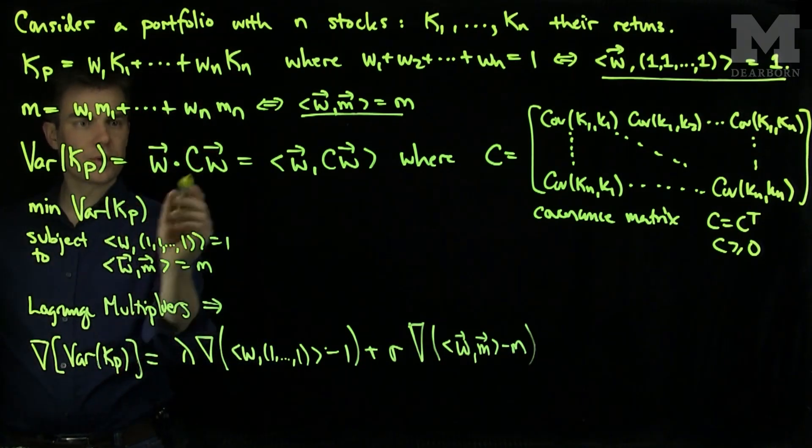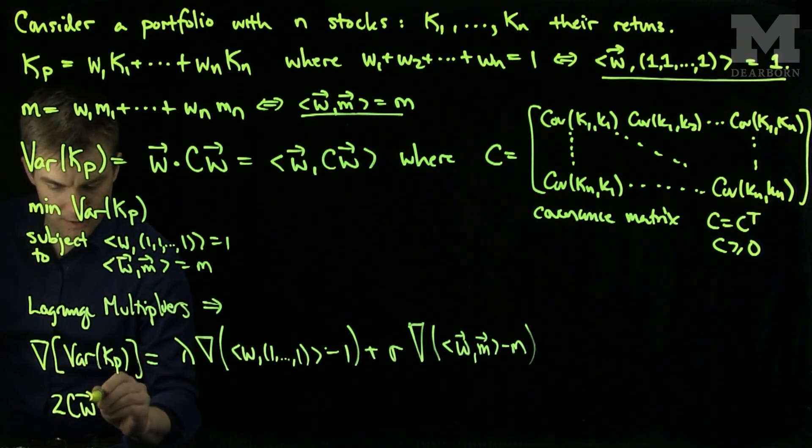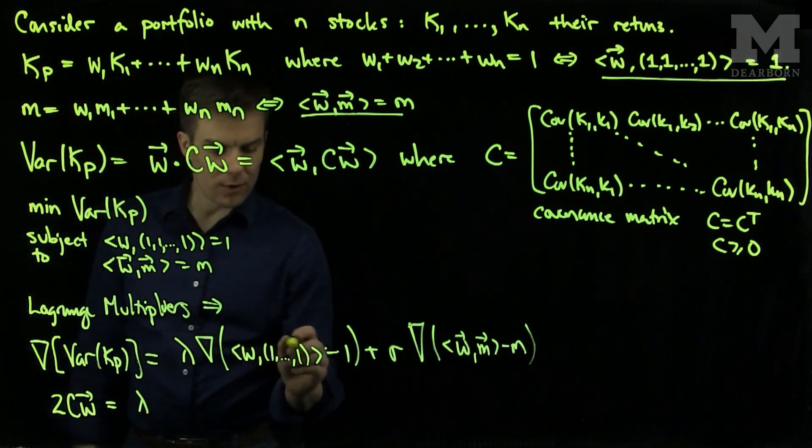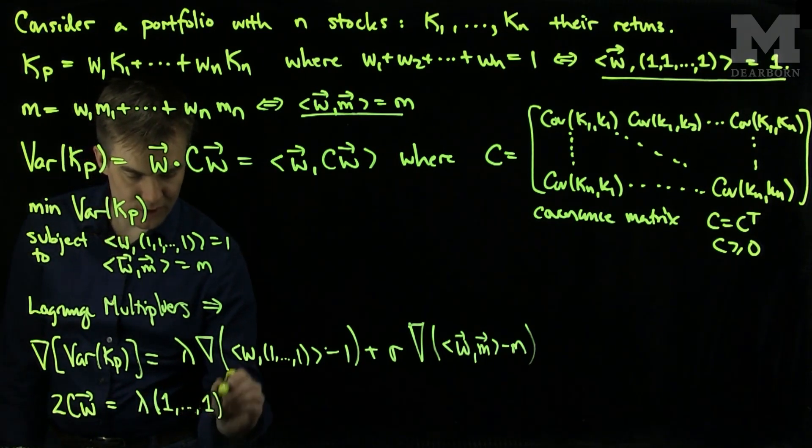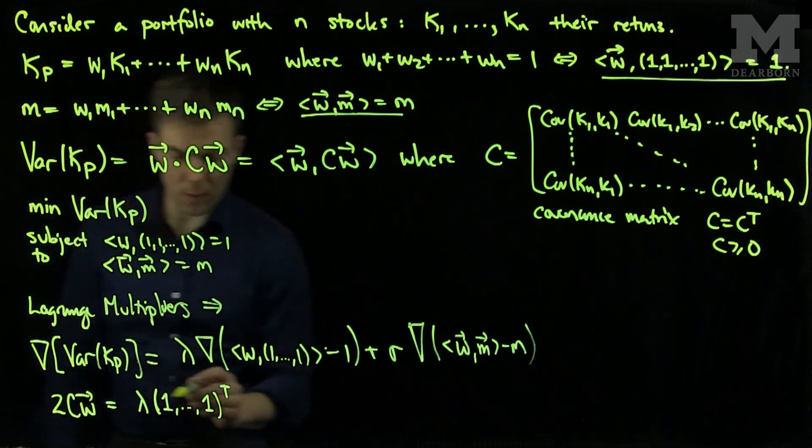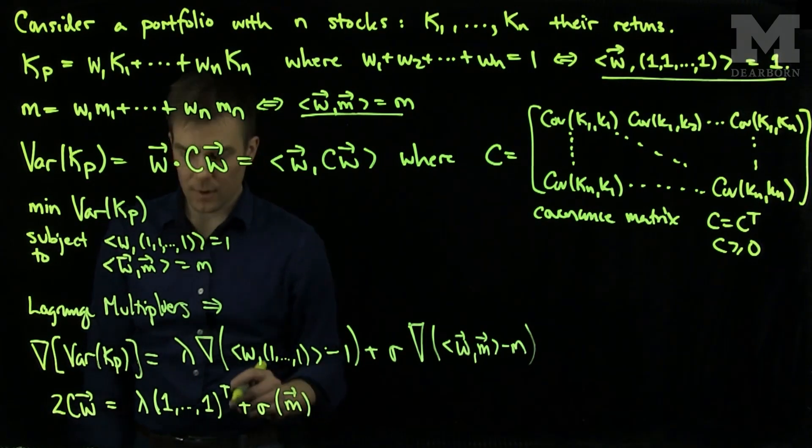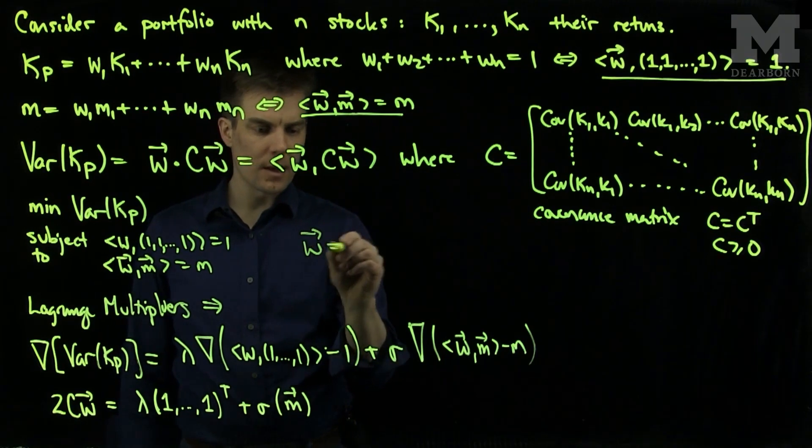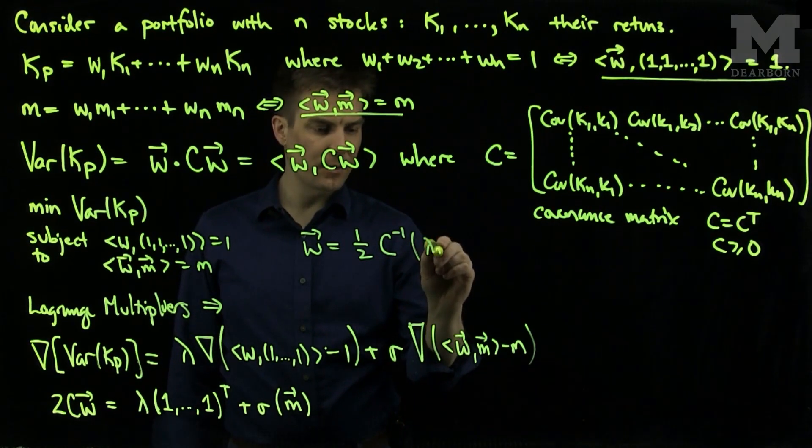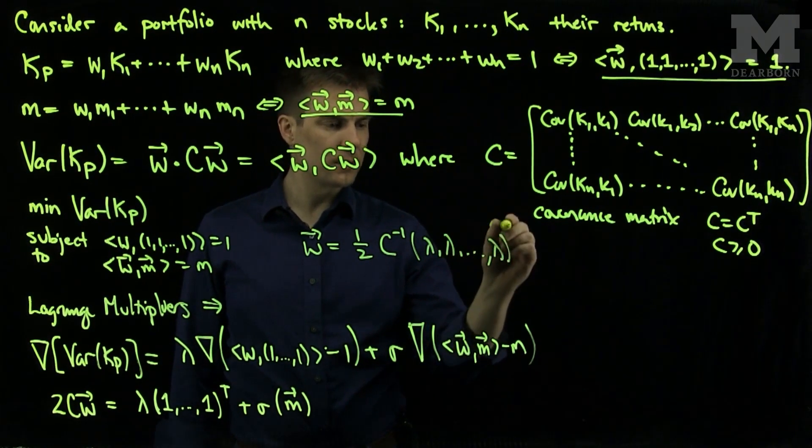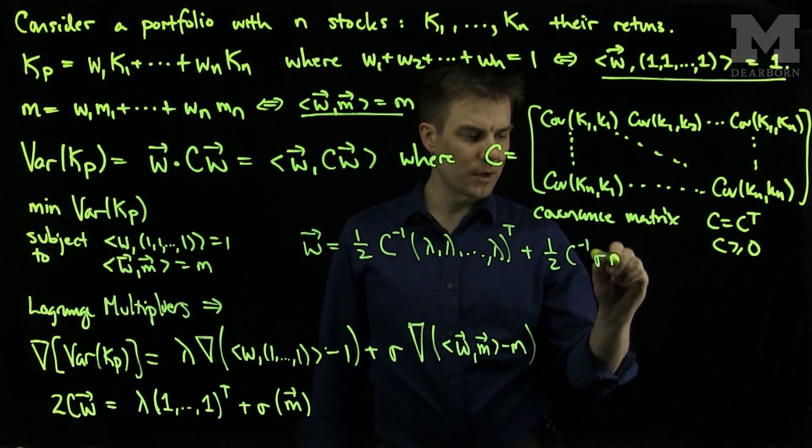So we can see that what will happen is when I compute the derivative of this, I will get 2, the matrix C, applied to w, will be equal to lambda. The derivative of this condition will simply just be all of these ones. But now to make sure that I have m in the right dimensions, I'll put a transpose here since this is an n rows by one thing, plus sigma times the vector m. This tells me that w is one-half C inverse of lambda times the ones transpose, plus one-half C inverse of sigma m.